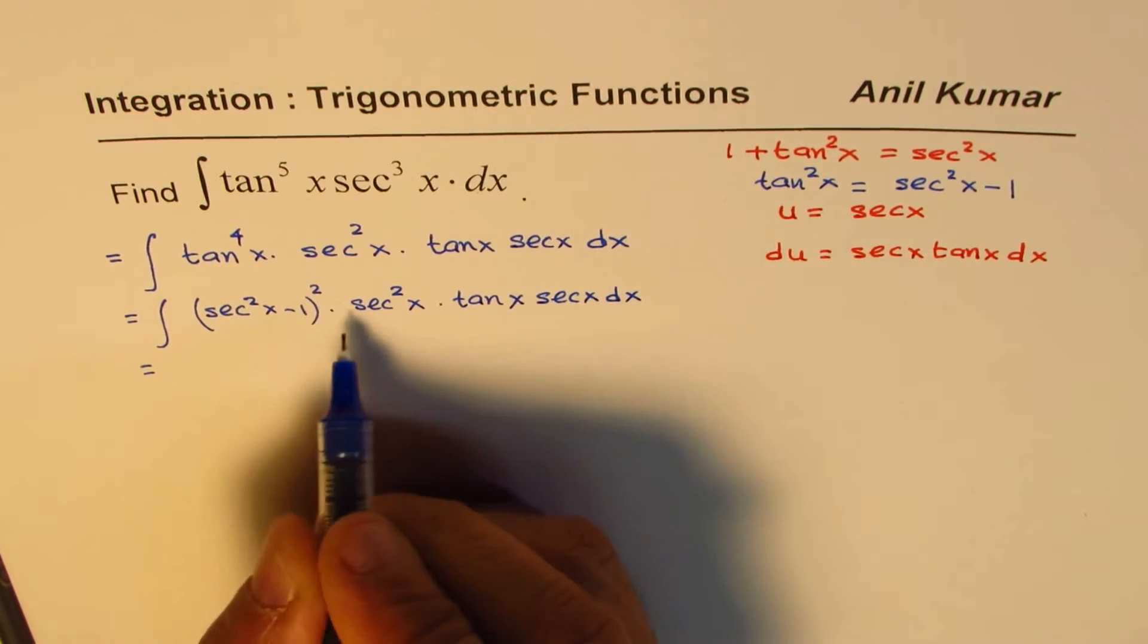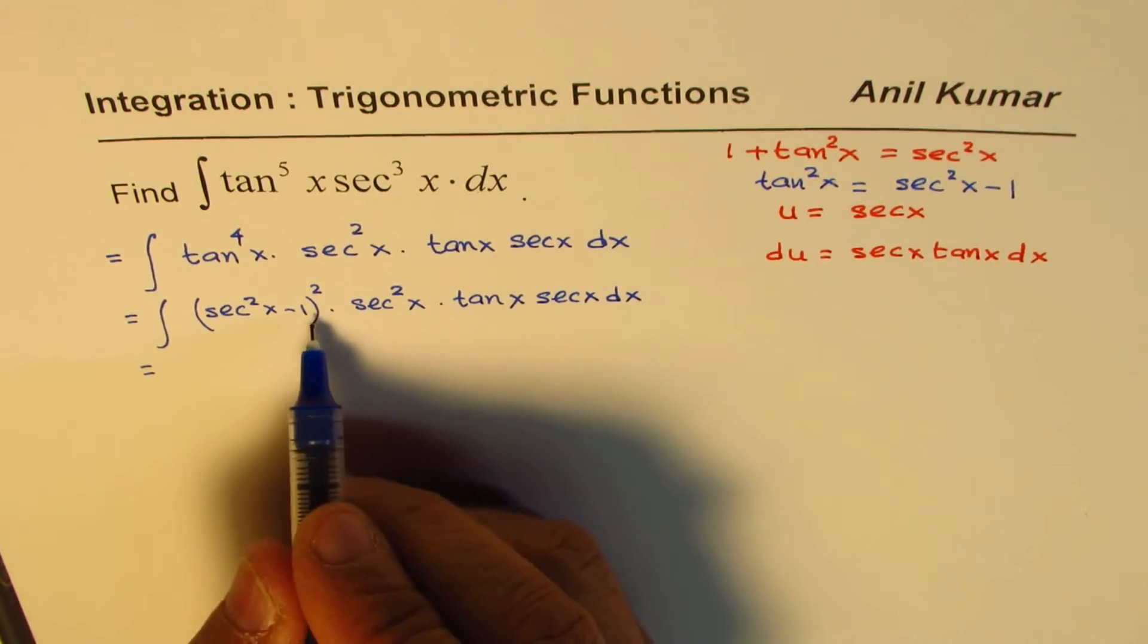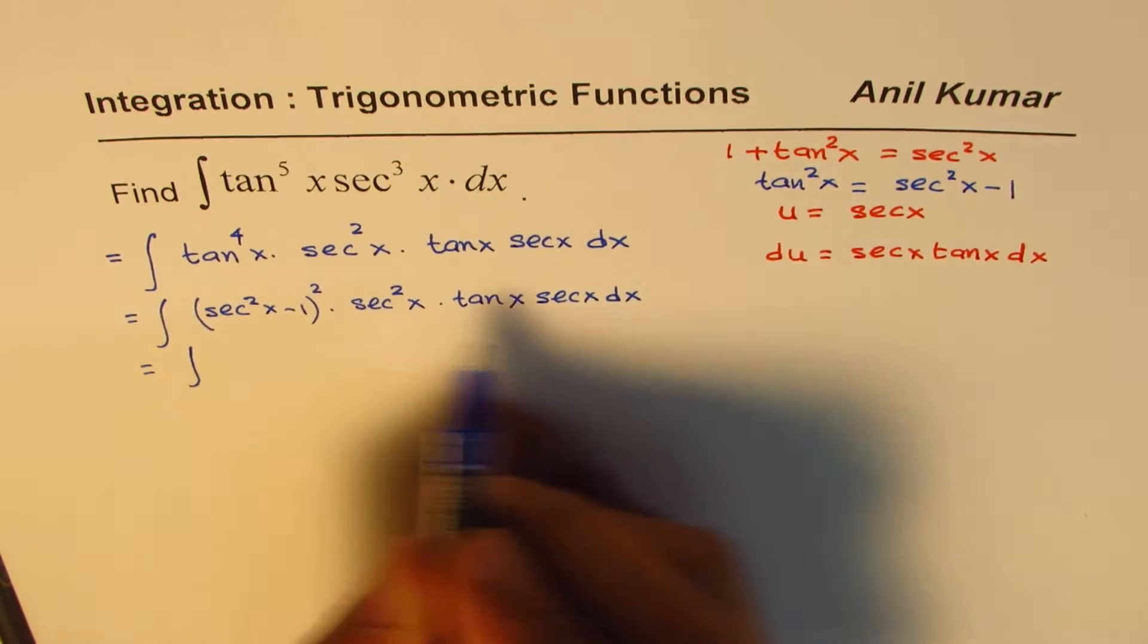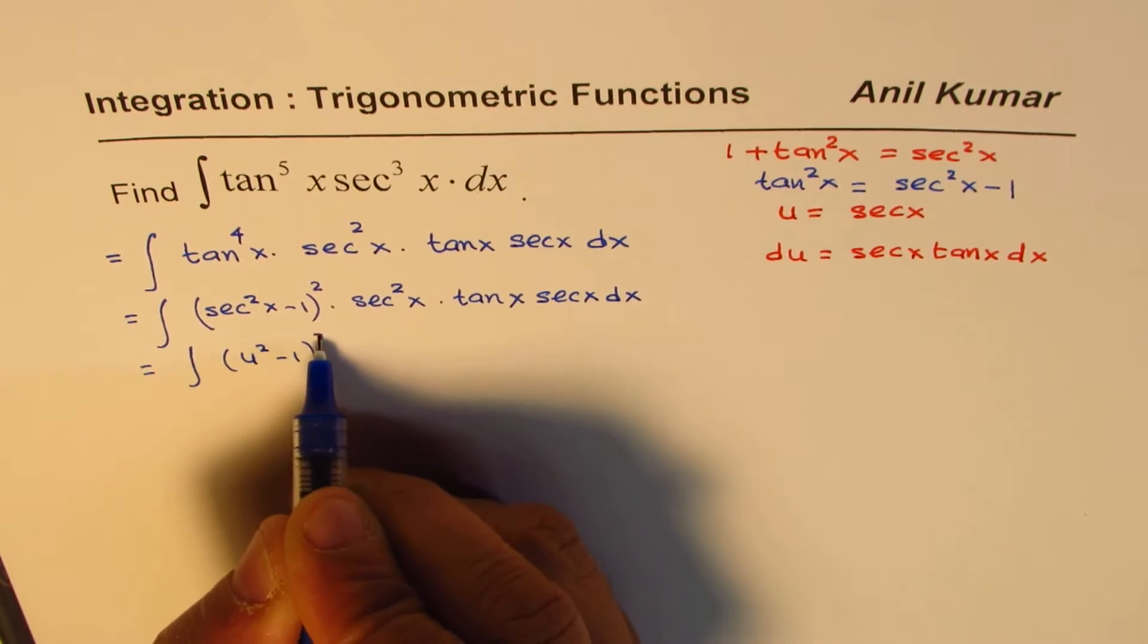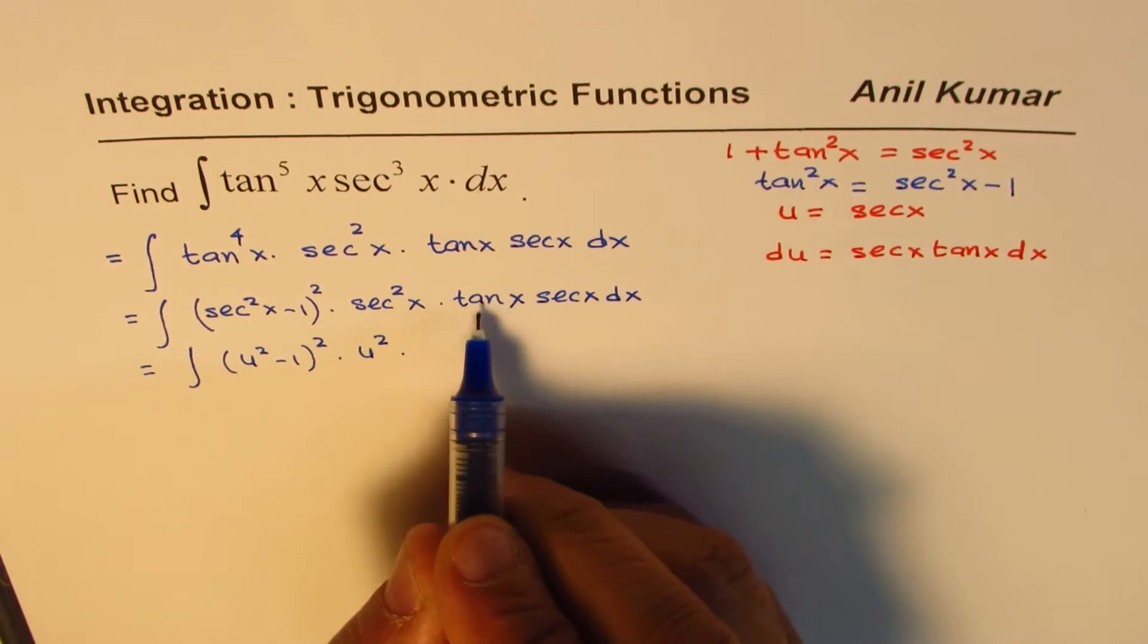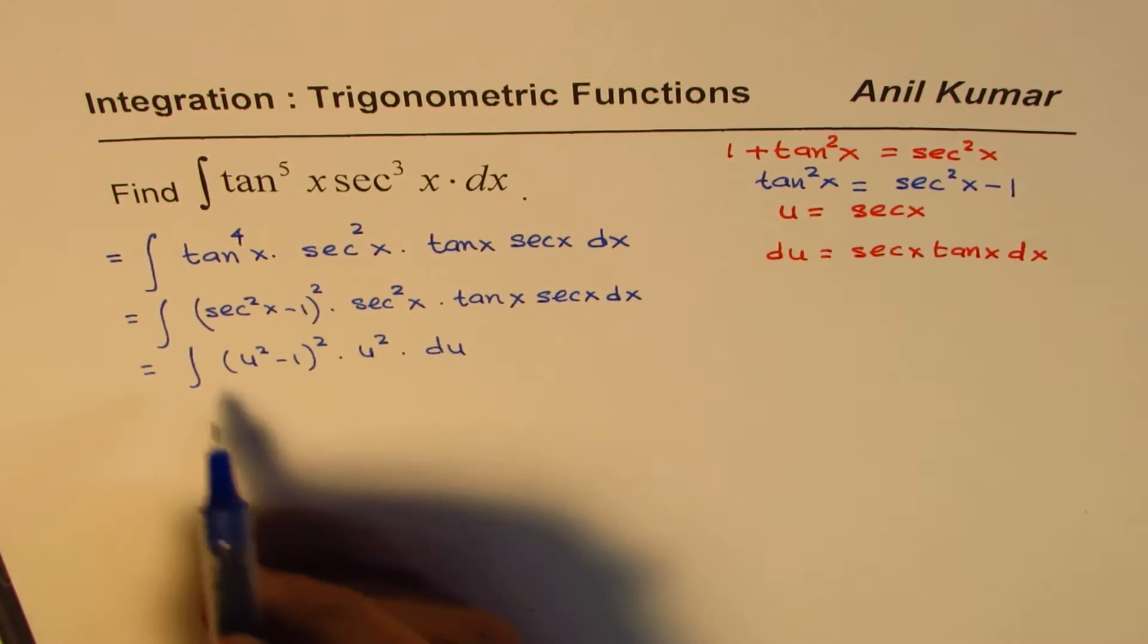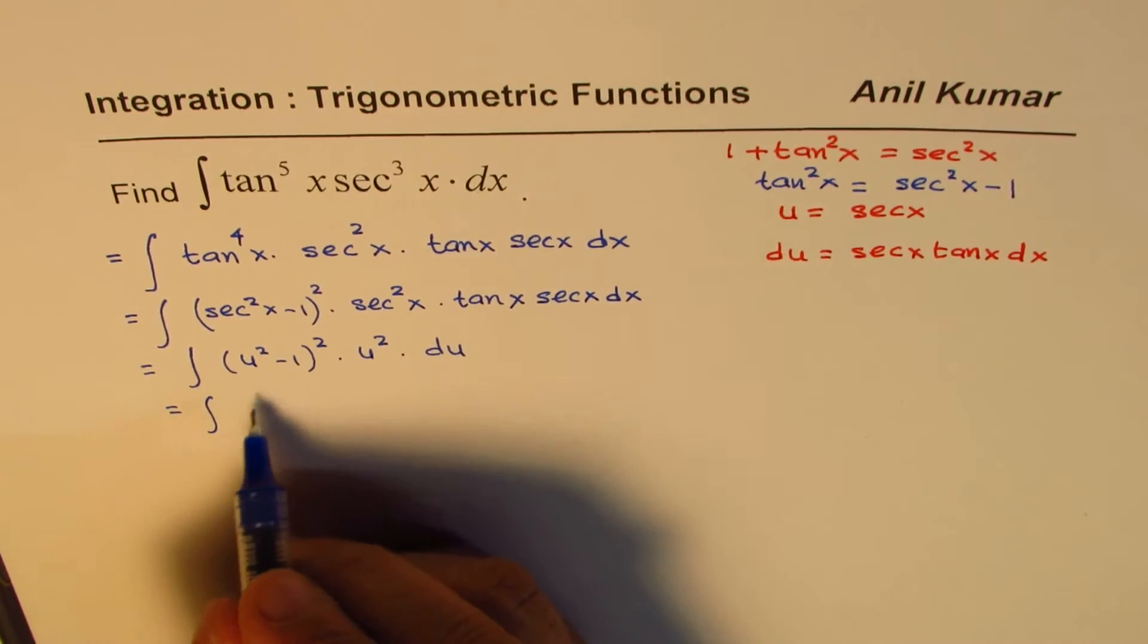Now at this stage you can always expand this and then multiply and then replace or you can substitute. So we prefer to substitute here. So let us substitute u for secant, so we get u square minus 1 whole square times u square times tan x secant x dx is equal to du. So now we have integral with just powers.